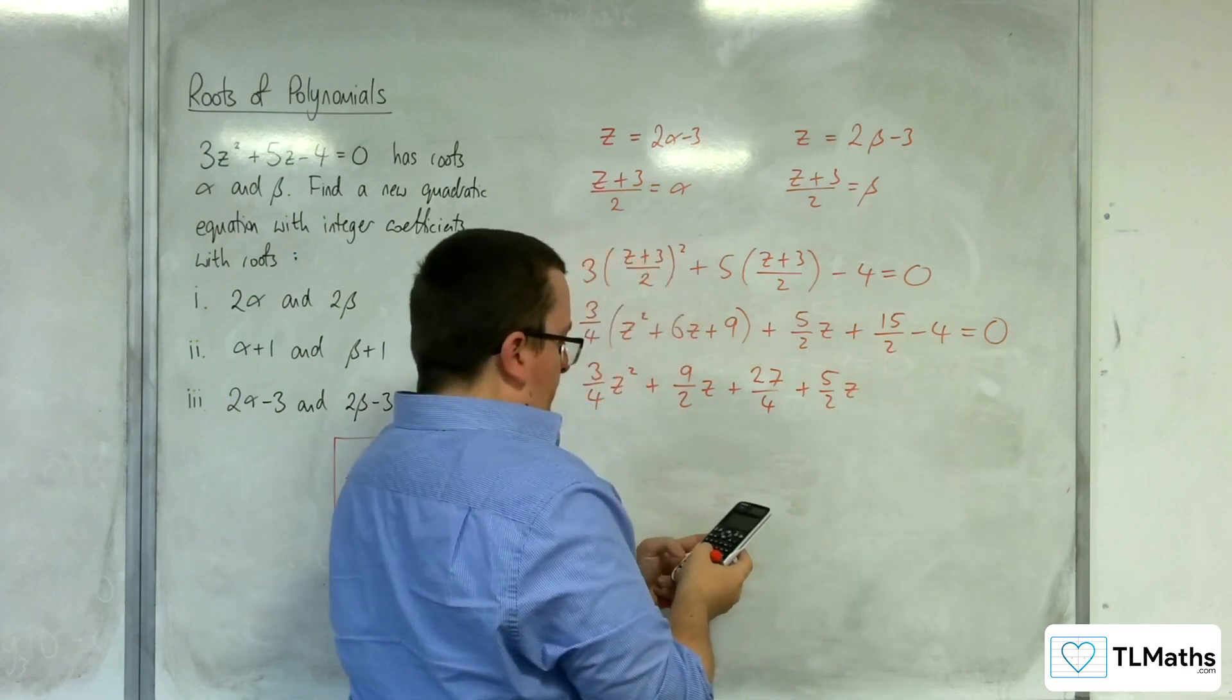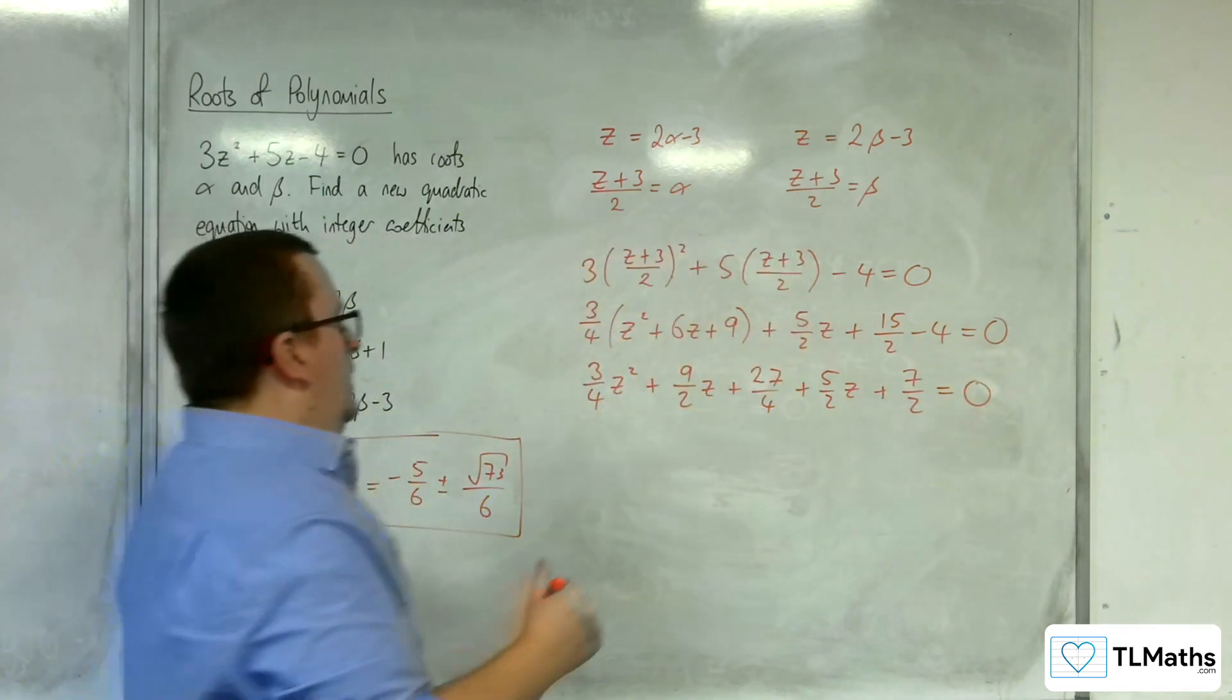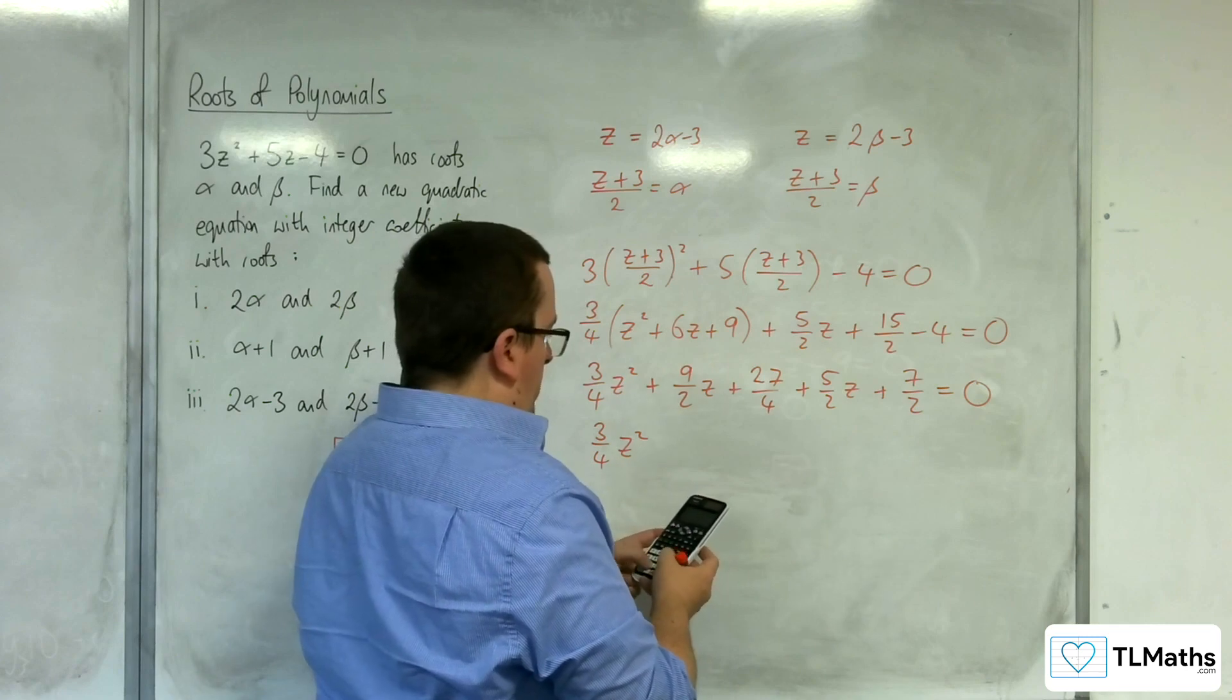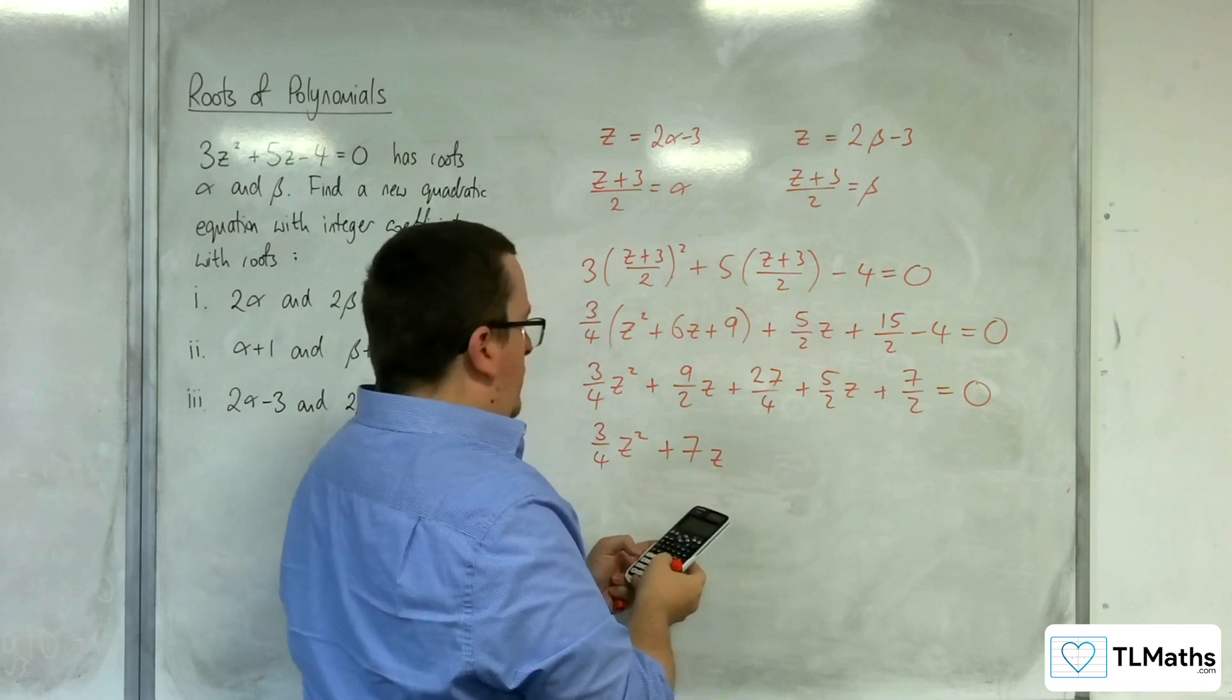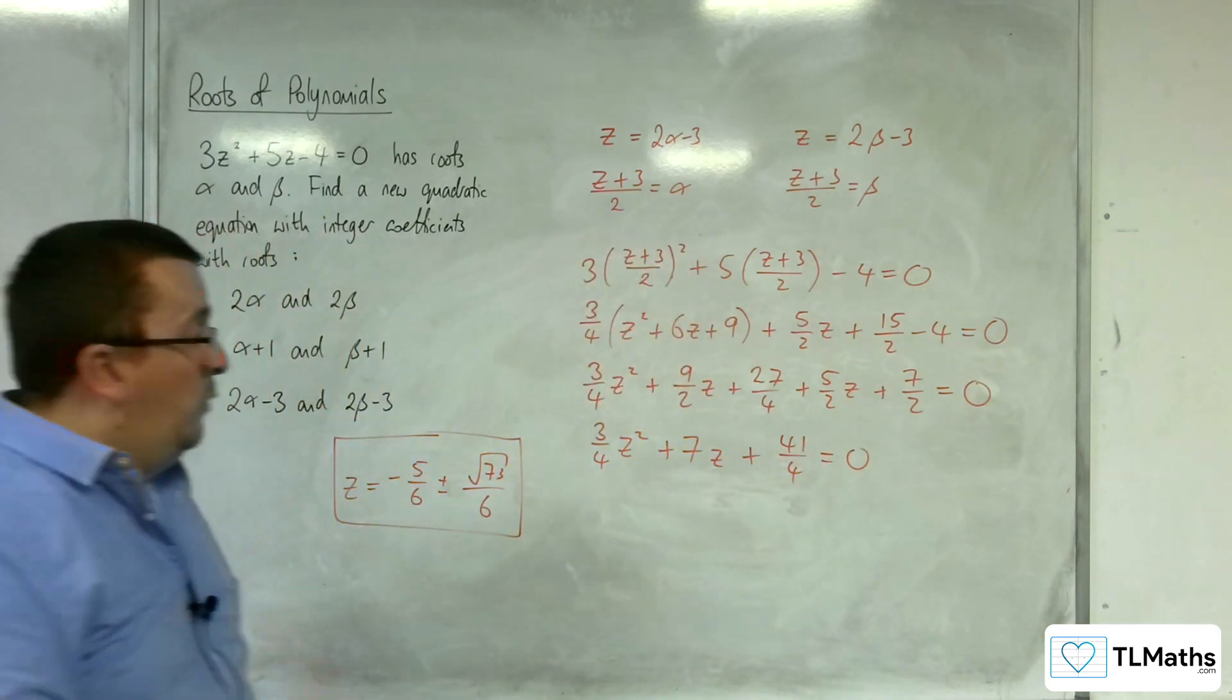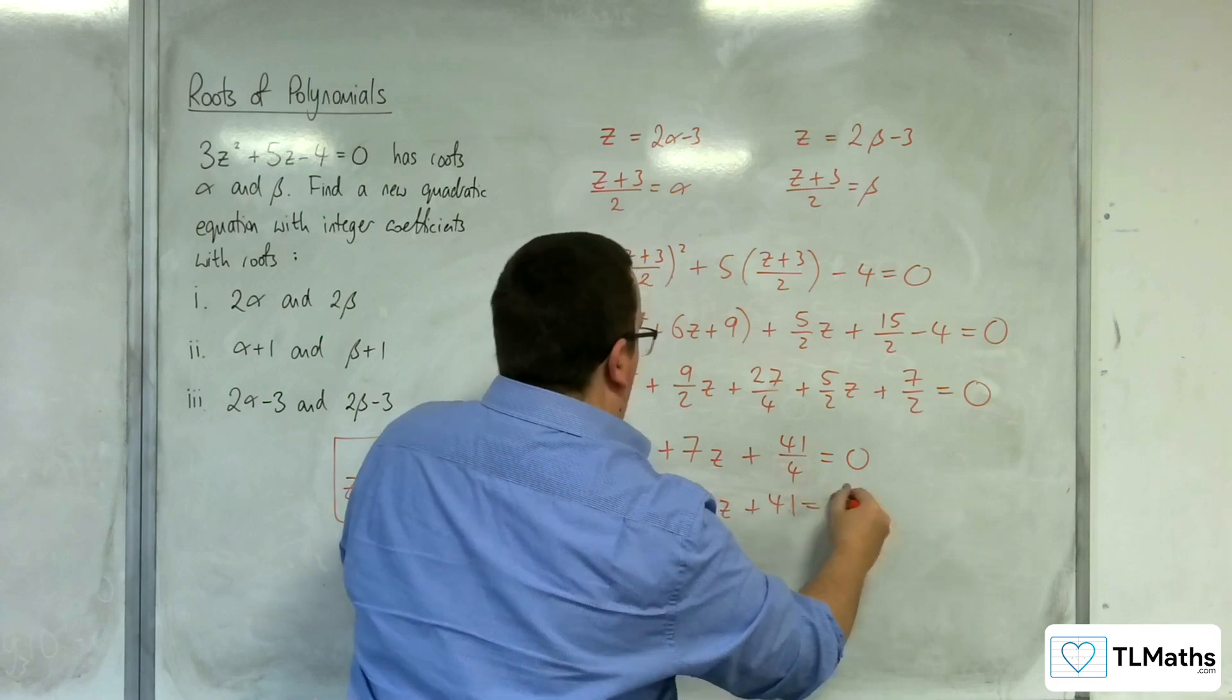So 3 quarters z squared, and then we've got 9 halves plus 5 halves, so 7z. And then 27 quarters plus 15 halves, so 27 quarters plus 30 quarters is 41 quarters, take away 4. Then I need to multiply through by 4 to get the integer coefficients. So 3z squared plus 28z plus 41 equals 0.